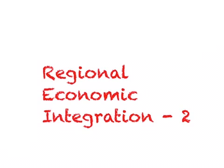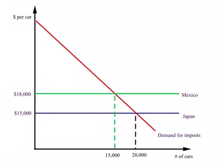Let us look at the following example. Consider a diagram where we are looking at the demand for imports of cars by the U.S. On the horizontal axis we have the number of cars imported by the U.S., and on the vertical axis we have the price of each unit of car. Suppose there are two producers of cars: Japan and Mexico. Japan is willing to export a car for $15,000 per unit, and Mexico can export a similar car for $18,000.